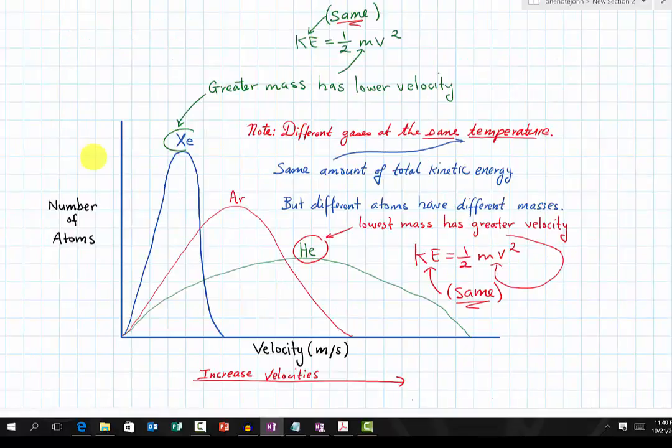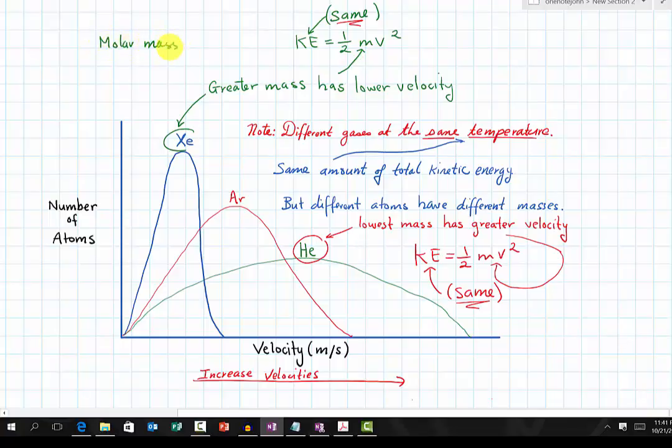Here we have another Maxwell-Boltzmann diagram. In this case, we are specifically looking at the molar mass of the molecules. For the y-axis, it's the number of atoms. For the x-axis, again, it's the velocity. If we look at this graph, we know there are different molecules. One important piece of information is that the different gases being recorded here are at the same temperature.